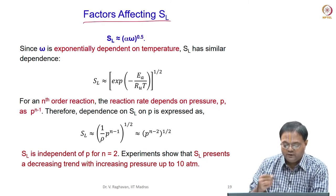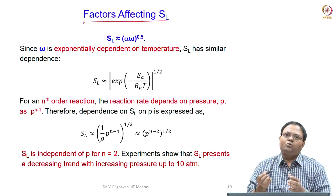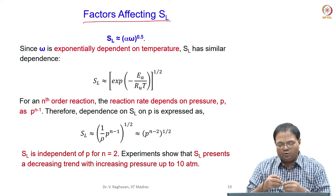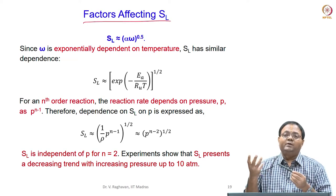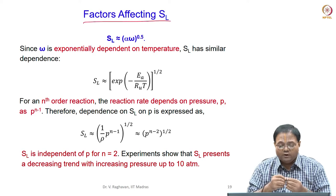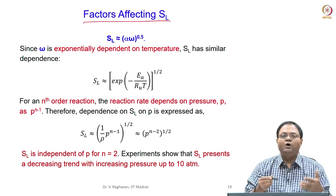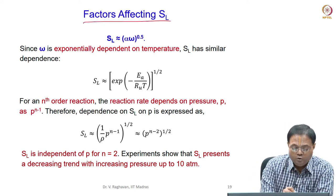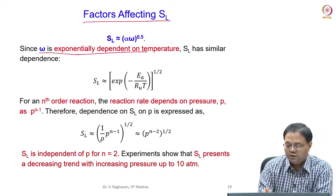Let us see in detail. When I say alpha and omega, we are normally interested in finding the temperature and pressure dependence, and also the phi dependence which we have already seen. Omega, the reaction rate, is exponentially dependent on temperature.